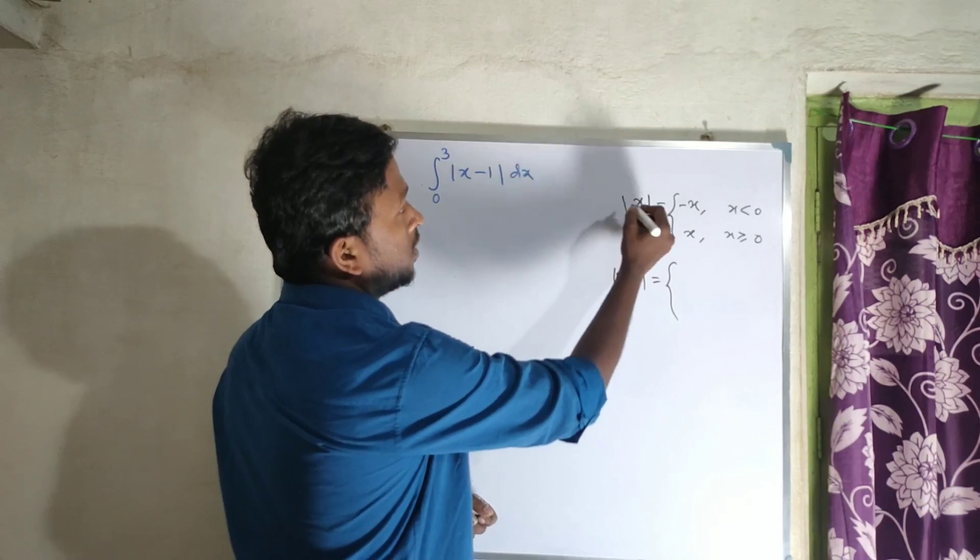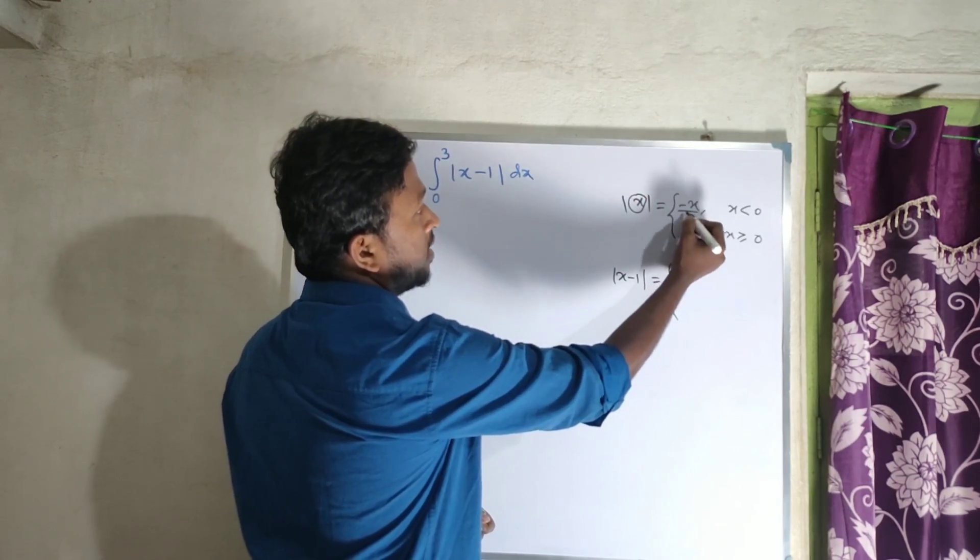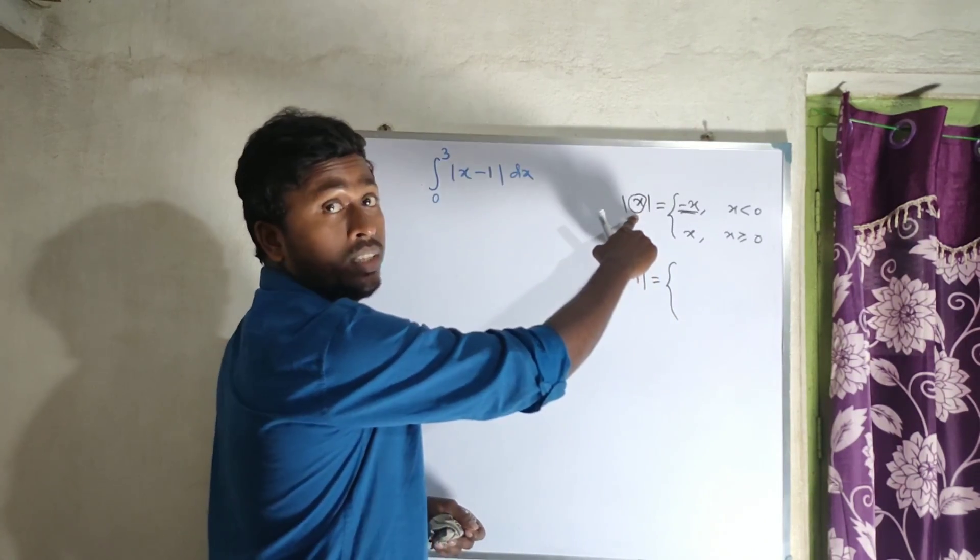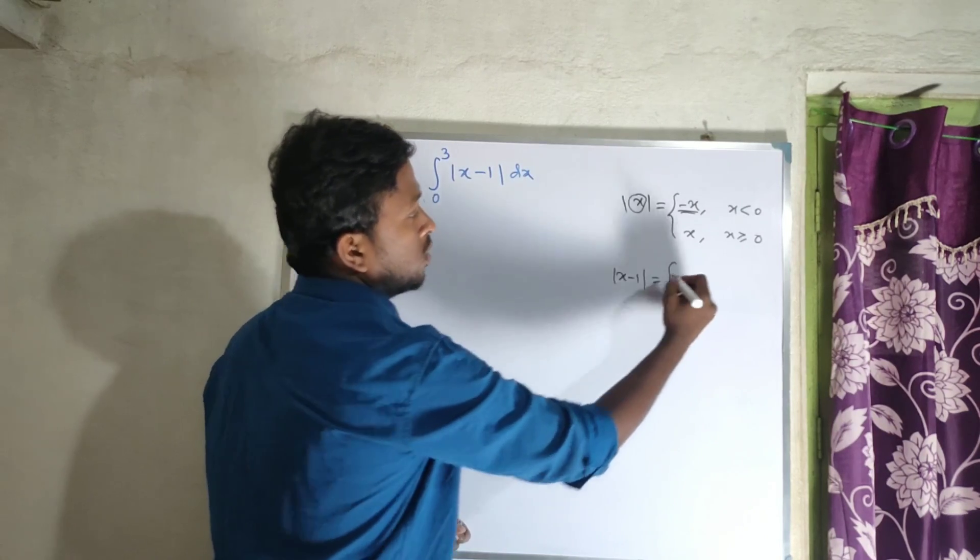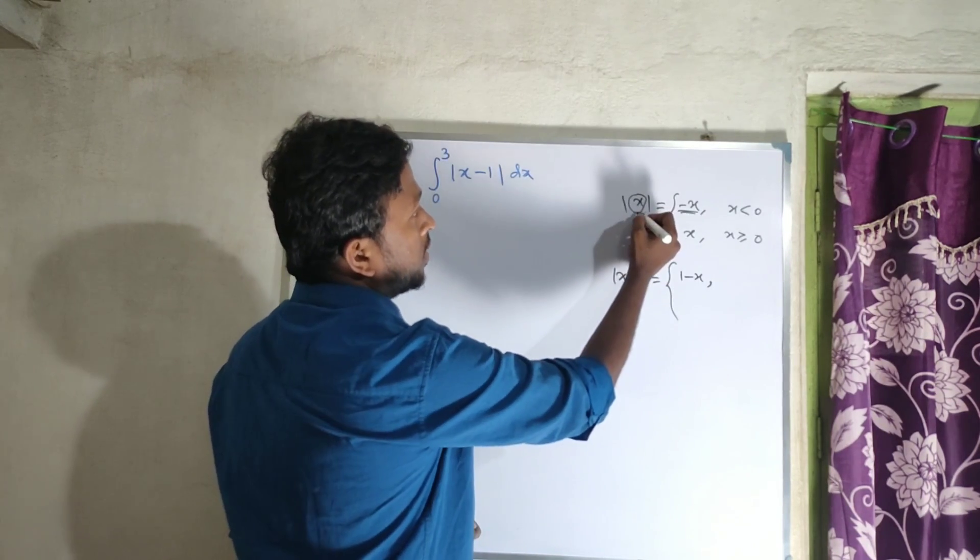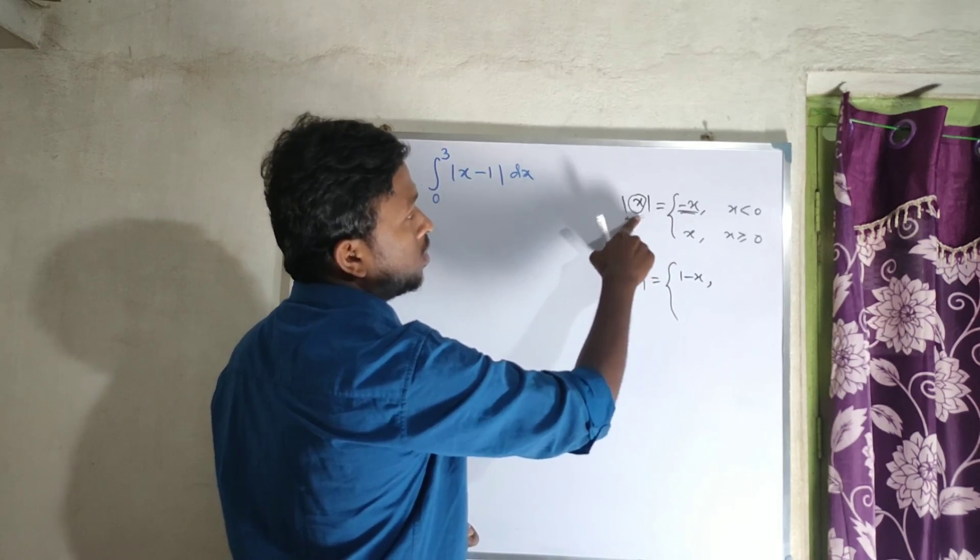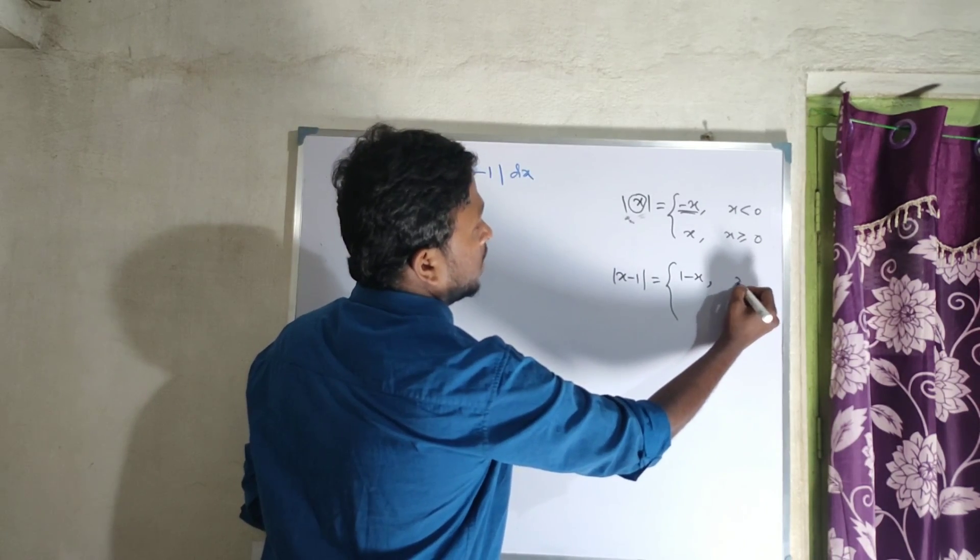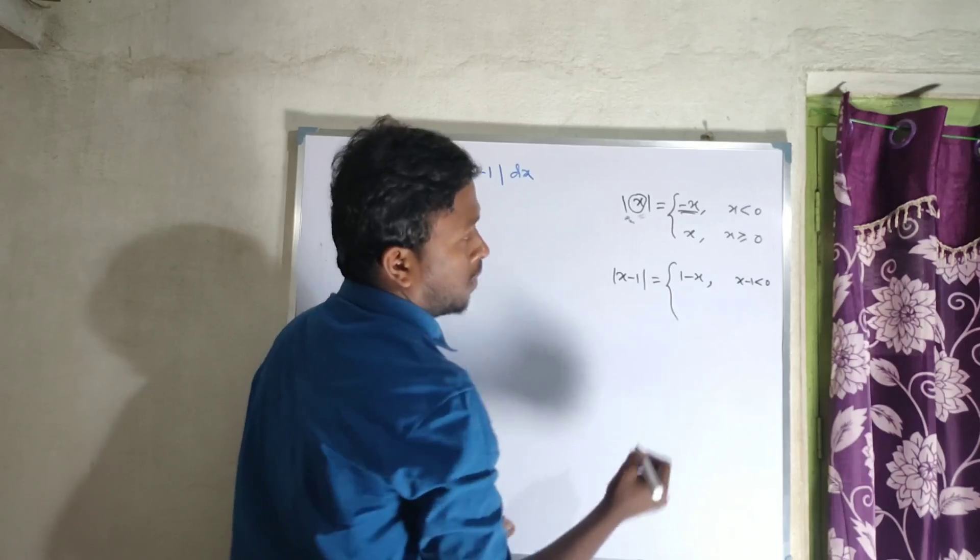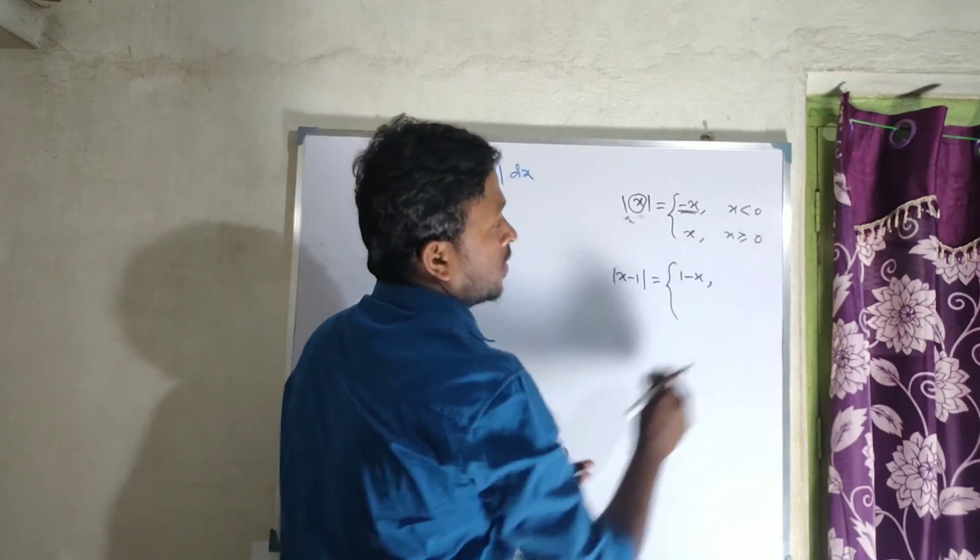The first value will be minus of this quantity. So minus of x minus one, which means one minus x. And the condition is when the inside is less than zero. So x minus one less than zero, which means x less than one.